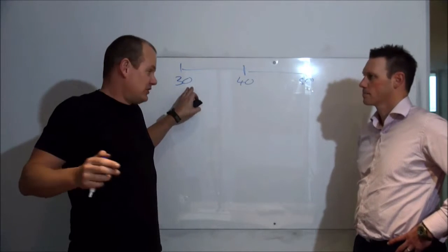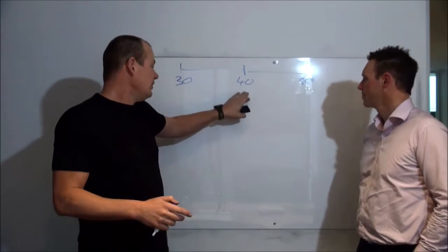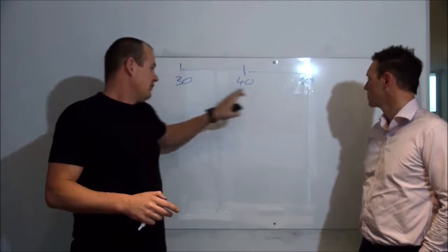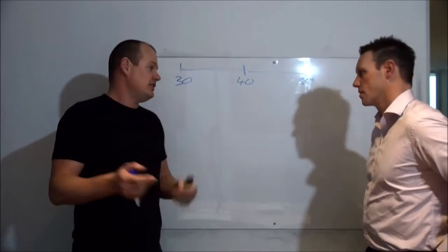Get to 40 and 50. Really, if you think property doubles in the capital cities about every, say, let's give a worst case 10 years.